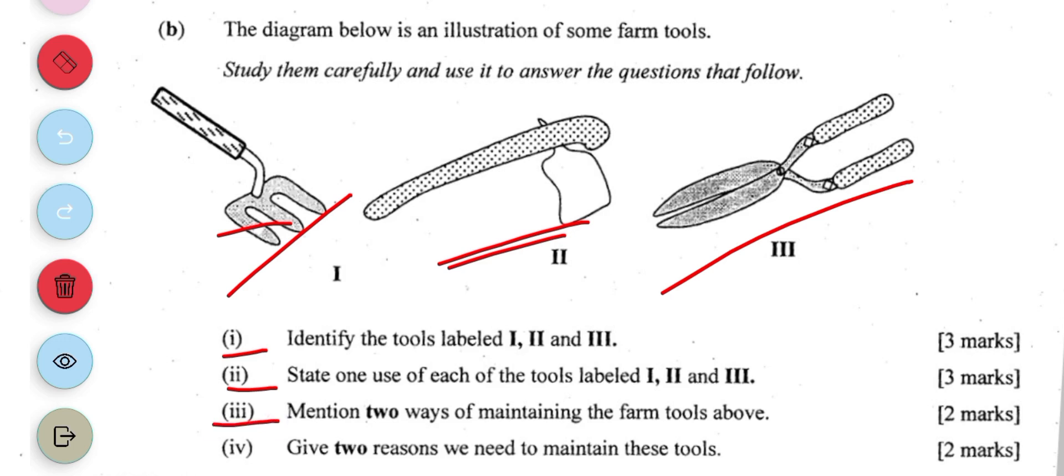Mention two ways of maintaining the farm tools. You can grease or oil the metal parts, sharpening of the sharp parts, and then changing the blade. Then wash and dry them after use.